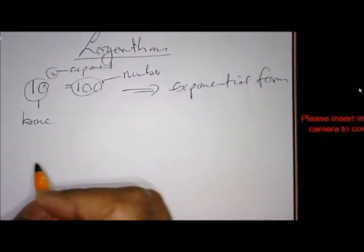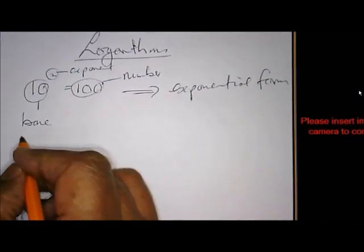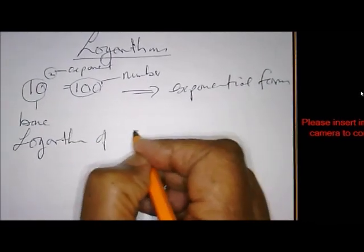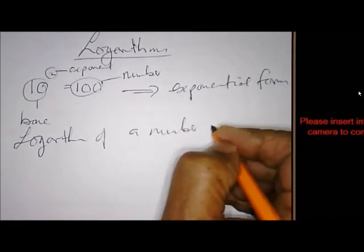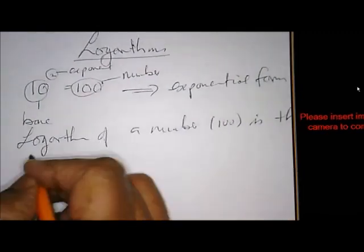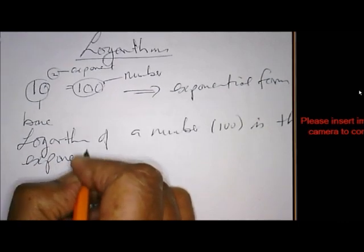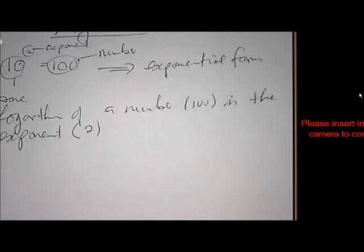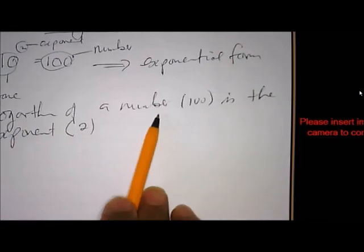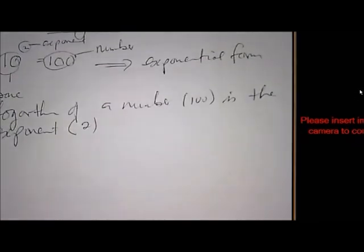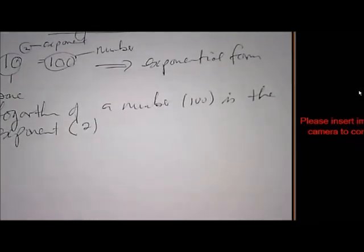For the change into the logarithmic form, John Napier said that the logarithm of a number - that the number is 100 - is the exponent, and the exponent is 2. That is very important, people. The logarithm of a number is the exponent. So in other words, the word log basically means exponent. Is it clear?